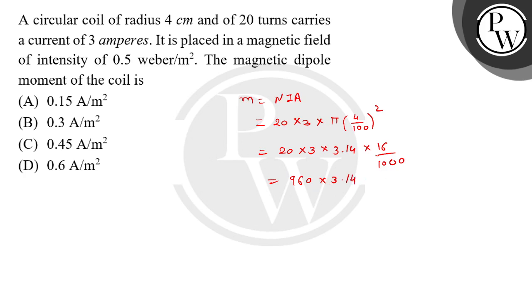Okay, yeah, one more zero will be there. So divide it by 100000. So if you multiply 960 with 3.14, it will give you 3014.4 into 10 to the power minus 4.